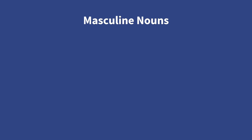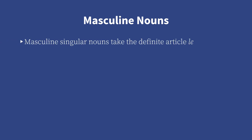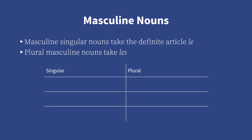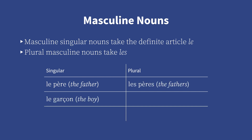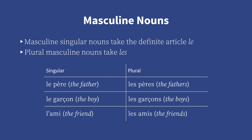Masculine nouns. As mentioned earlier, masculine singular nouns take the definite article le, while plural masculine nouns take les. Here are some examples of masculine nouns with their definite articles: le père — the father; les pères — the fathers; le garçon — the boy; les garçons — the boys; l'ami — the friend; les amis — the friends.